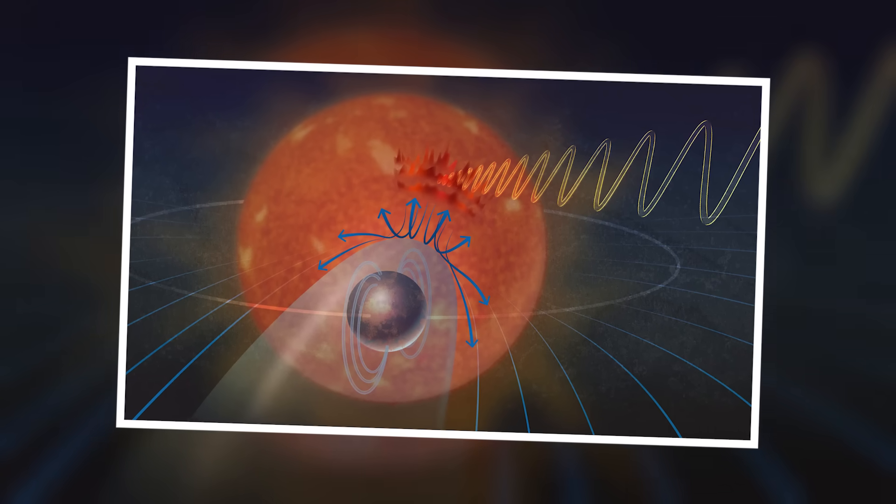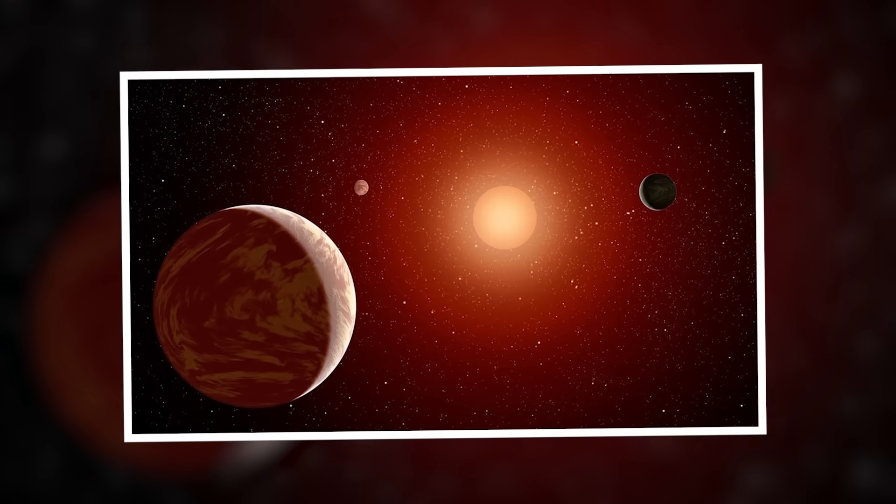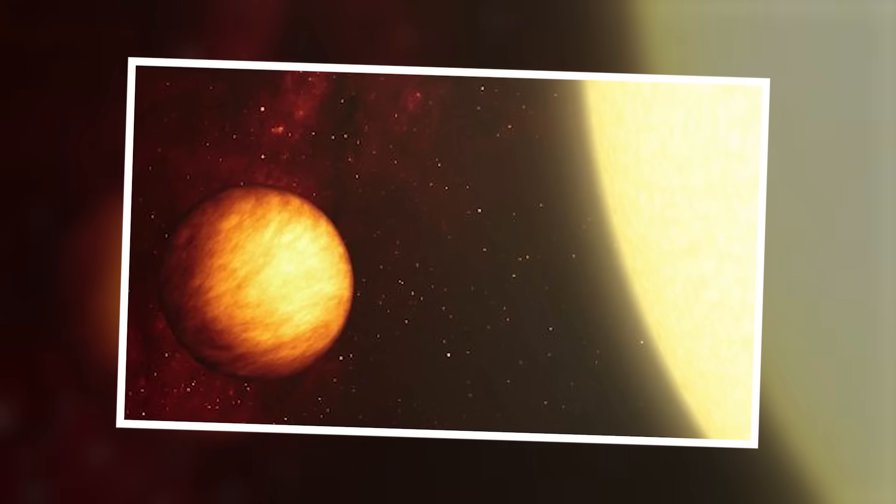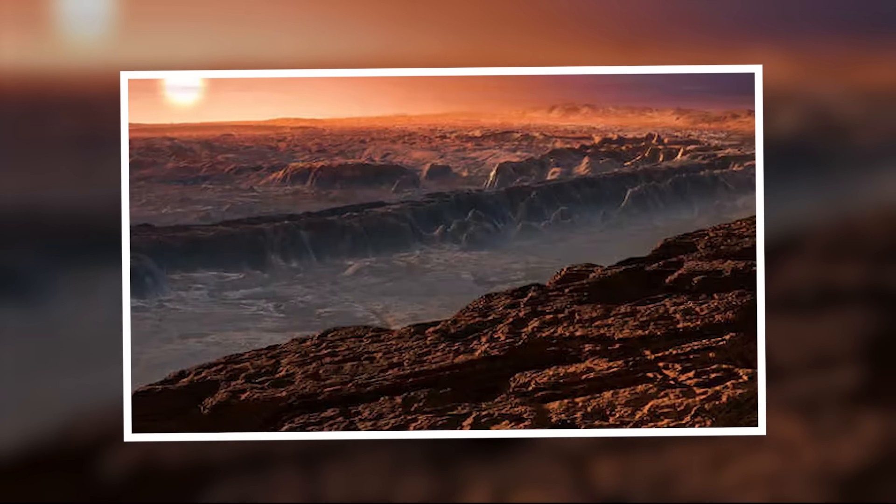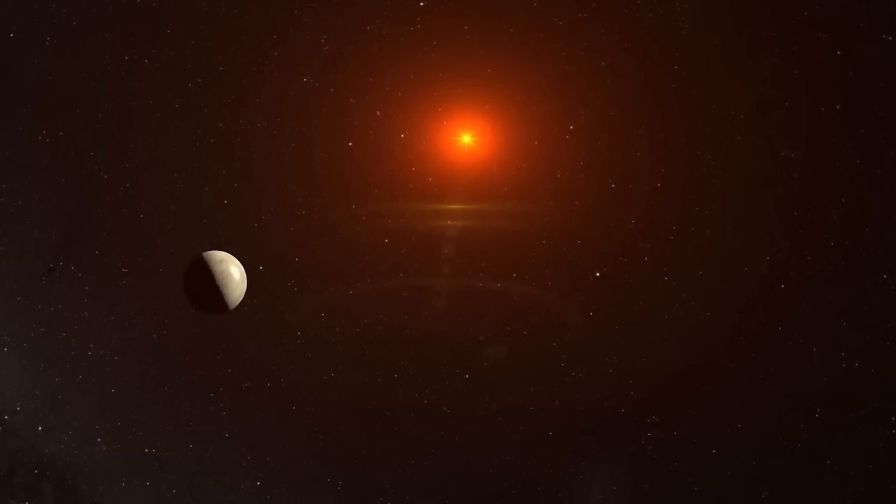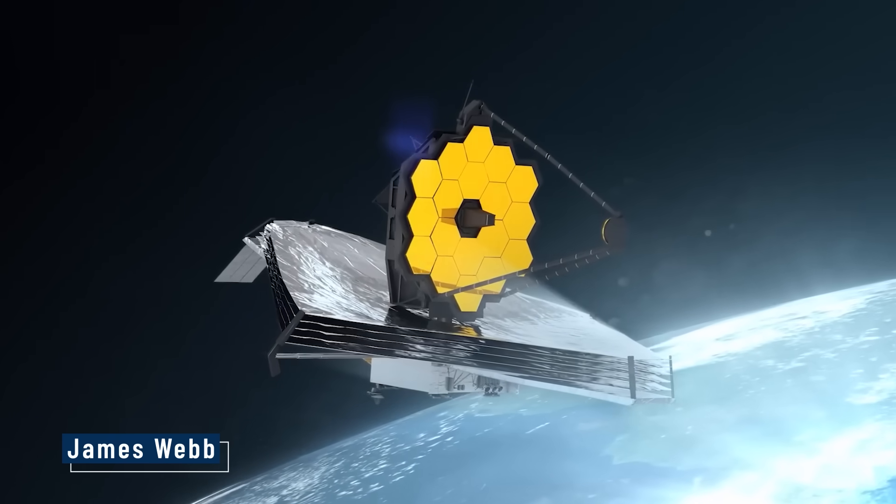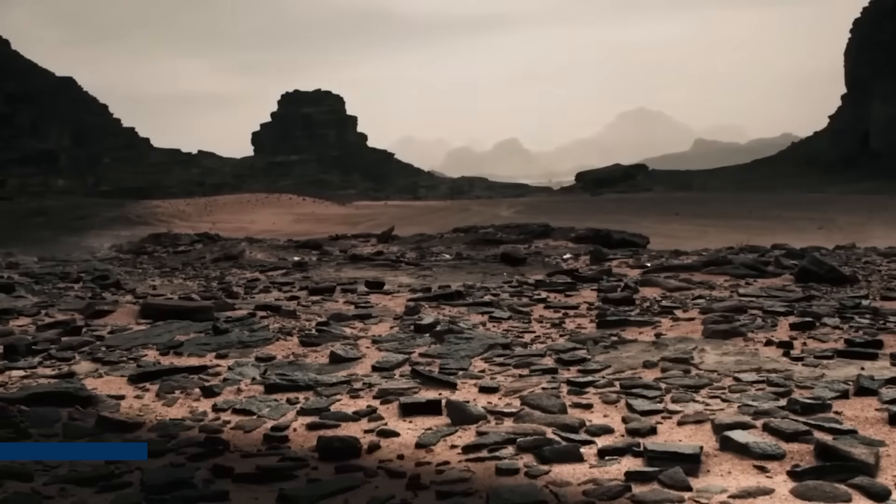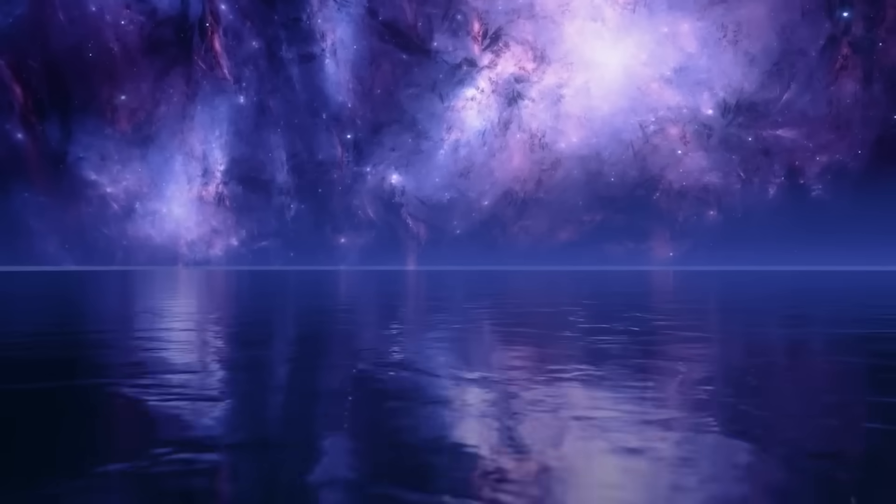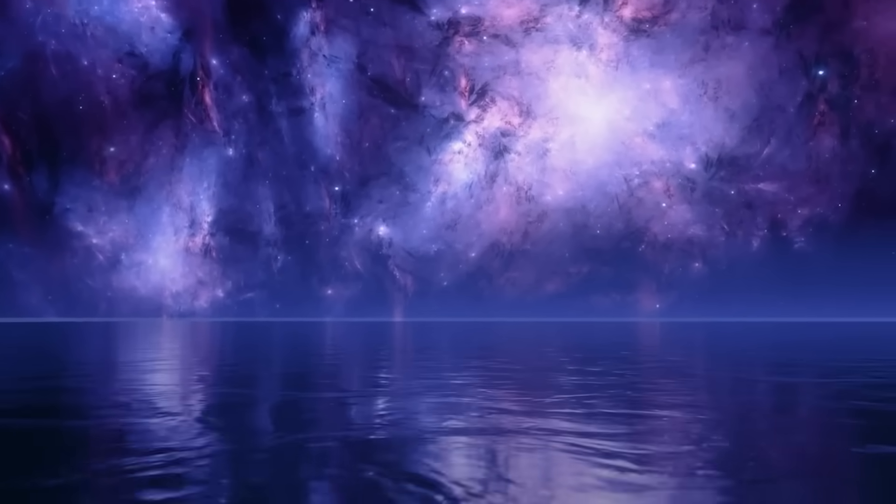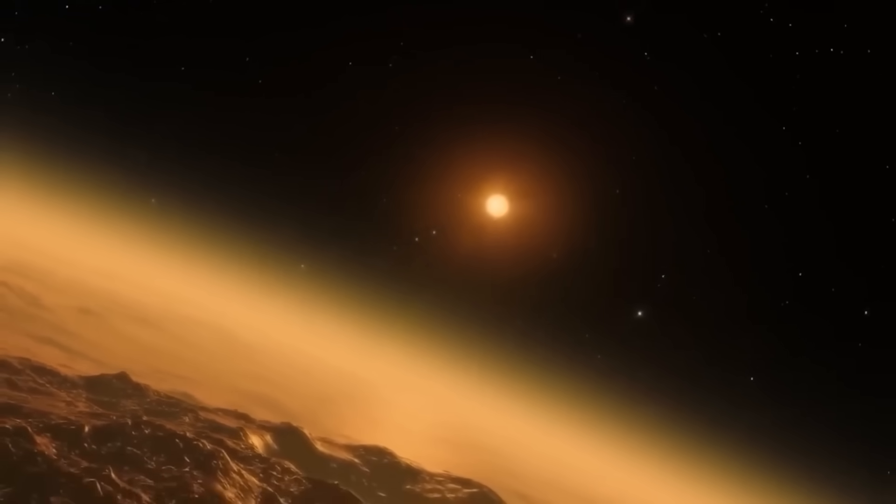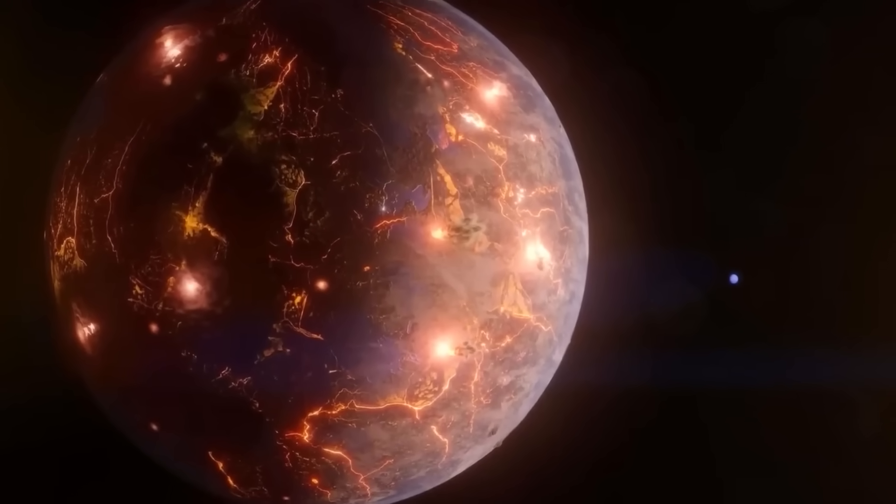Still, Proxima b holds a special place in science. Because it's so close, we can study it better than almost any other exoplanet. We now know it's a rocky planet, not a gas giant. We know its size, its distance from its star. And now, thanks to James Webb, we even have a sense of what it looks like. It's a planet in a tough neighborhood, but it's also the best shot we have at finding another Earth in our cosmic backyard. It's not perfect, but it's real, it's nearby, and it's possible.